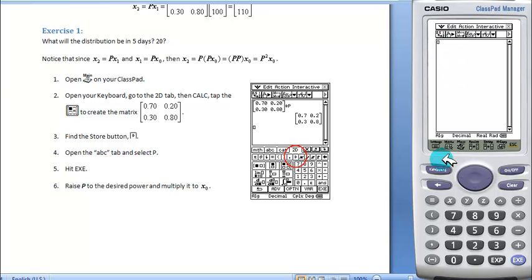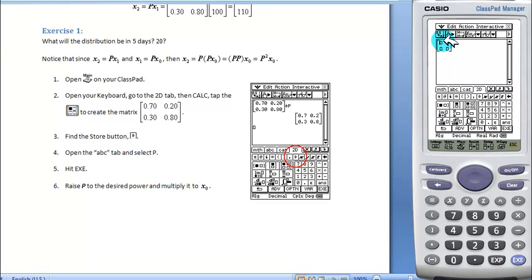To build a matrix, we have to open our keyboard, go to the 2D tab, go to the Calc tab, hit the 2x2 matrix, and we see a blank matrix here.